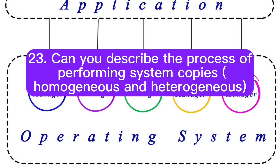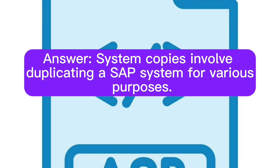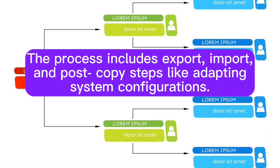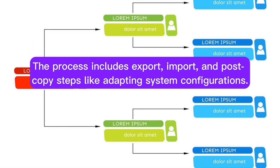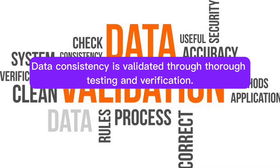Question 23: Can you describe the process of performing system copies — homogeneous and heterogeneous — and system refreshes, including post-copy steps and data consistency validation? Answer: System copies involve duplicating a SAP system for various purposes. The process includes export, import, and post-copy steps like adapting system configurations. Data consistency is validated through thorough testing and verification.